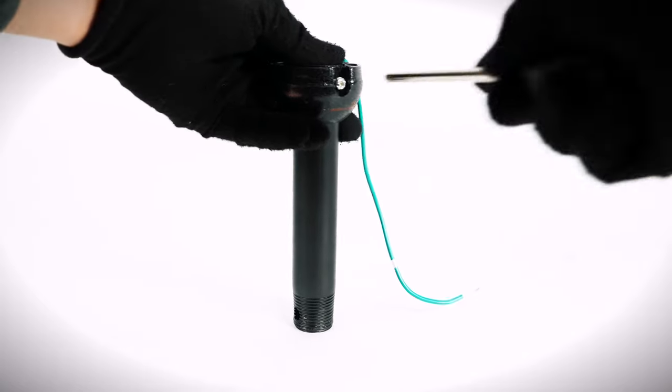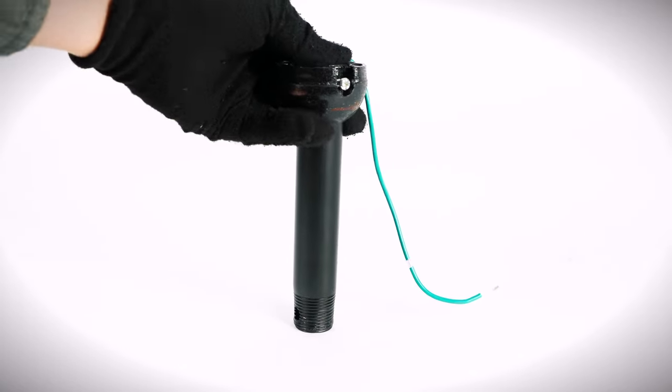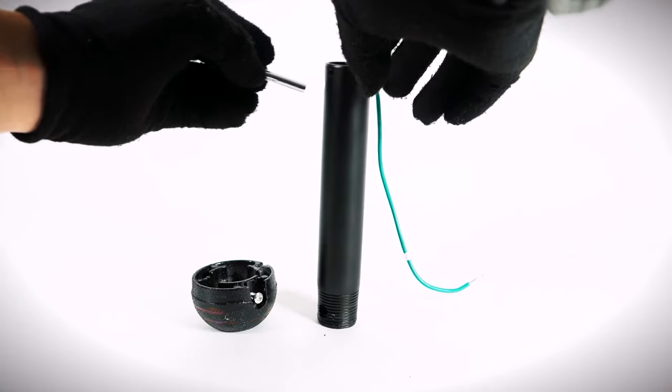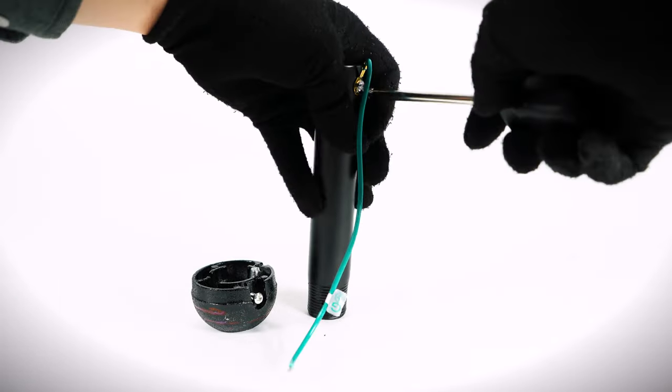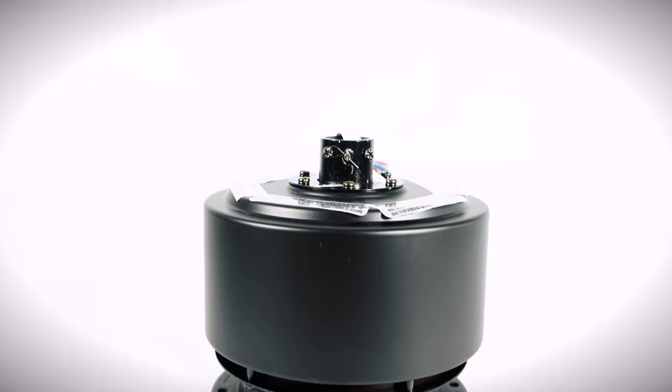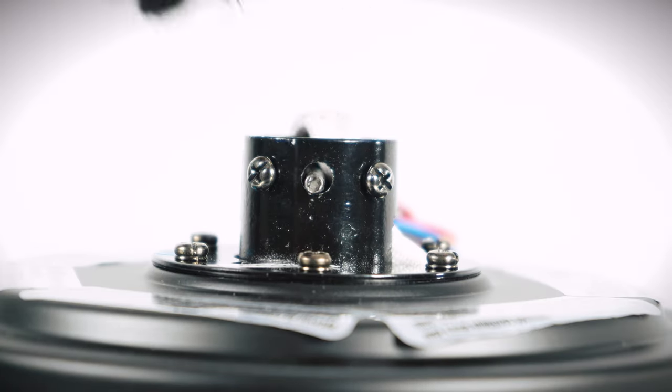On the ball down rod assembly, loosen the set screw and lower the ball off the down rod. Remove the cross pin and the ground lead. On the fan motor assembly, remove the clevis pin and cotter pin.